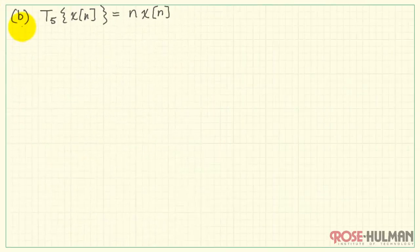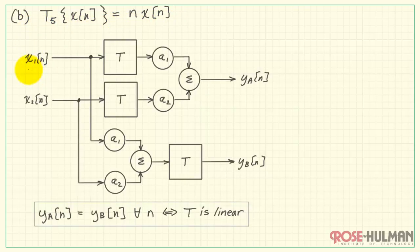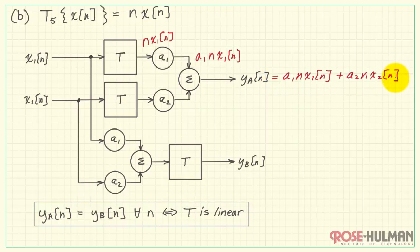Let's move on to system T5. This system says take the input X and multiply it by the time step N. We'll pass X1 through our system. That gives us N times X1 of N. And then multiply that by the scale factor A1. Similarly, we would have A2 N X2 of N. And we add those two together.